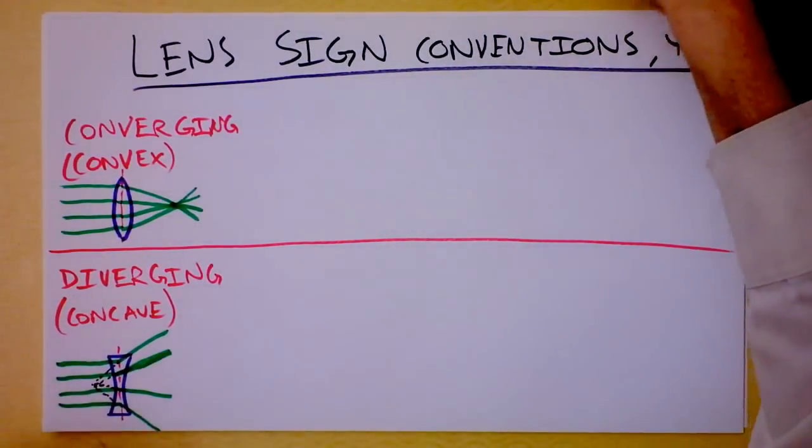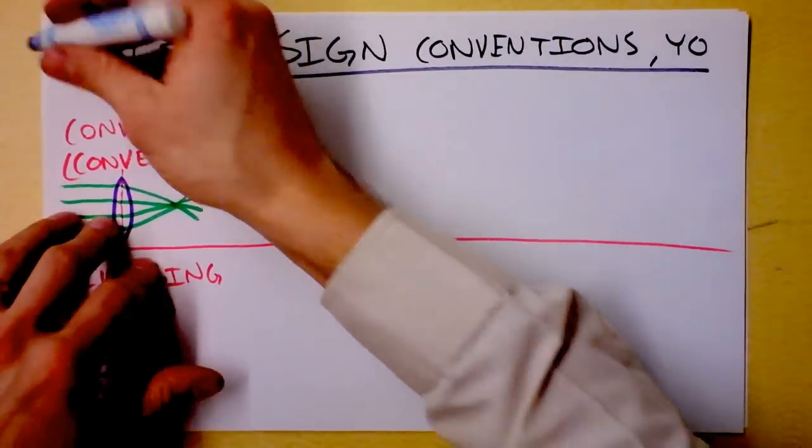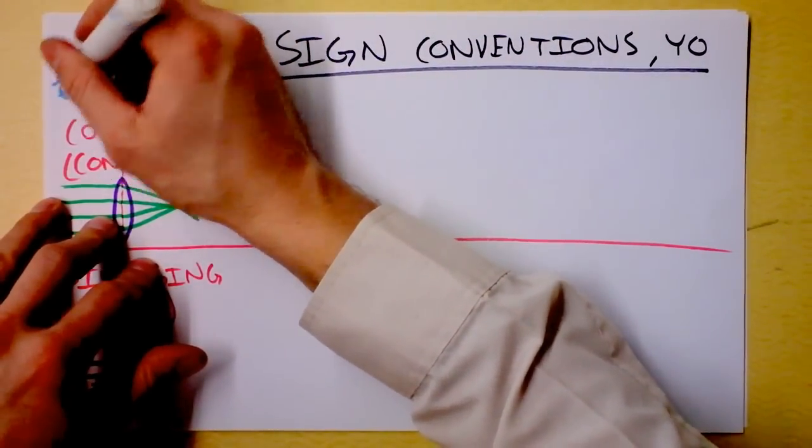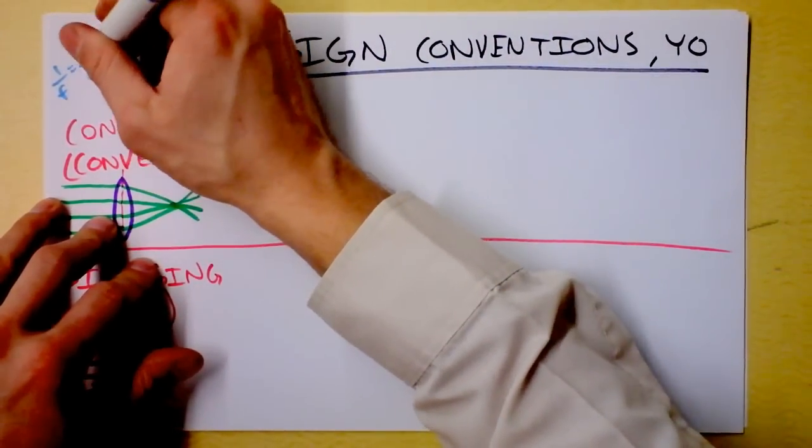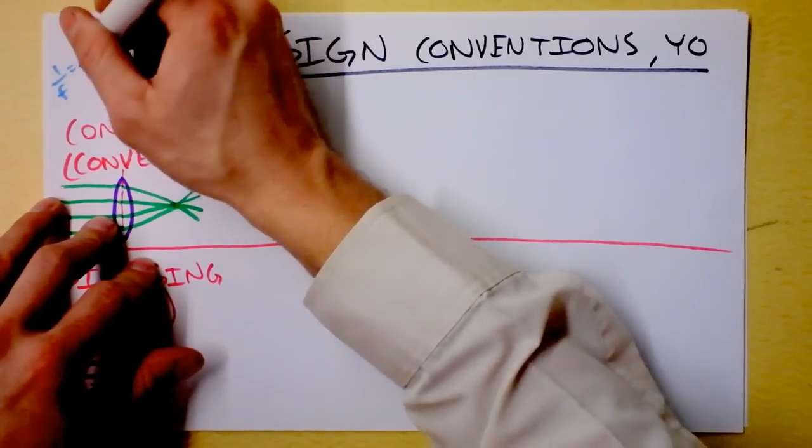You've perhaps heard the expression in English, mind your P's and Q's. That comes from a stupid way of writing this equation. I'm going to say 1 over the focal length is 1 over the distance of the image plus 1 over the distance of the object.